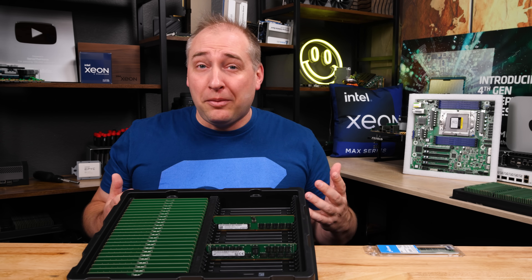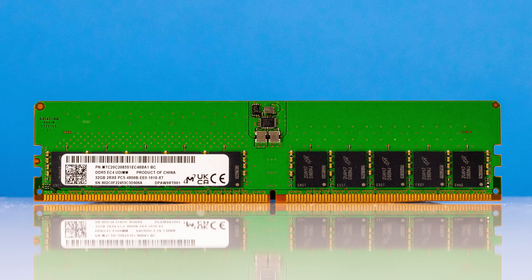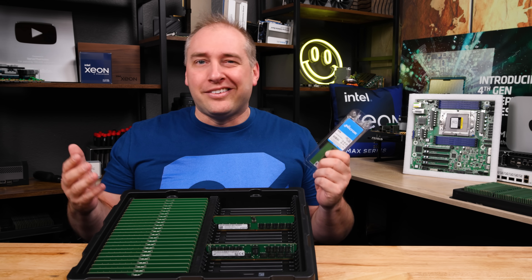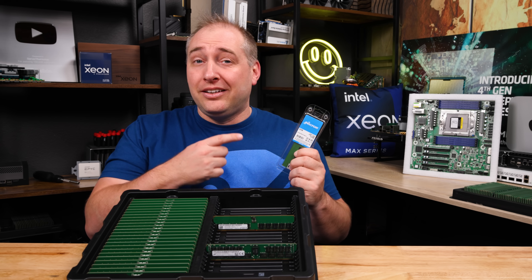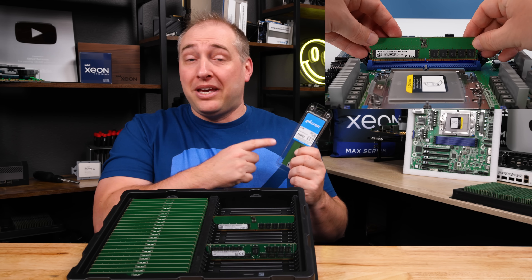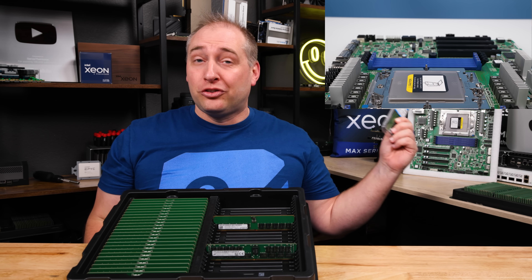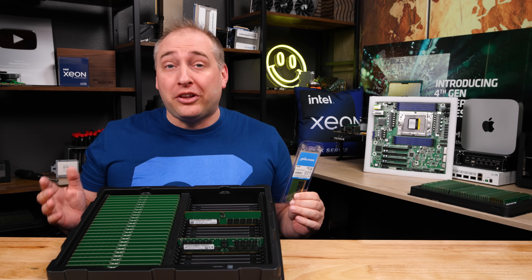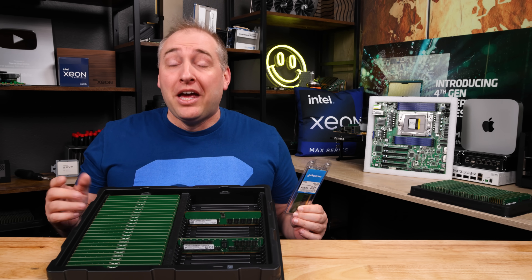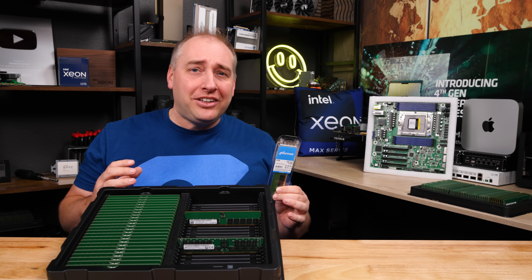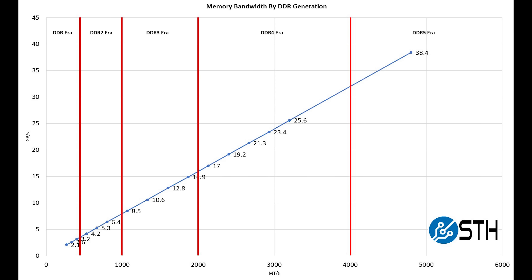One good example is this 32 gig DDR5 UDIMM — non-registered, unbuffered ECC for workstations and stuff like that. This is very different than the previous generation DDR4 UDIMM because you can't actually use this in a server workstation like this Genoa platform behind me. There is a good reason for that, but it's so new that a lot of people don't even know that's a thing. In this video I want to get into DDR5 and the why of DDR5 — why it's important.